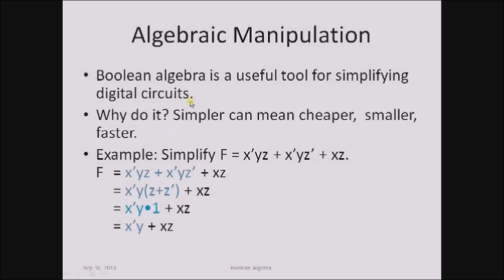Algebraic manipulation: Boolean algebra is a useful tool for simplifying digital circuits. We use Boolean algebra for simplifying and realizing circuits. Simplification makes the circuit cheaper, smaller in size, and faster. We will explore these three benefits in later sessions, but simplification is mainly used to reduce circuit size, increase speed, and obtain cheaper ICs.